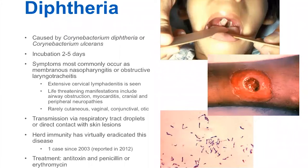It's an interesting illness because the bacteria — Corynebacterium — has to actually be infected by a virus itself. As you probably remember from microbiology, a virus that infects a bacteria is called a bacteriophage. So in order for the toxin to be produced, the bacteria has to be infected by this virus that carries a specific gene producing the toxin.